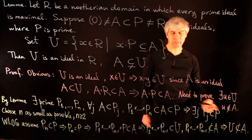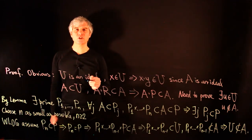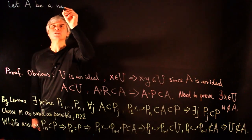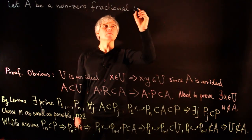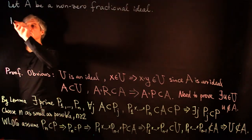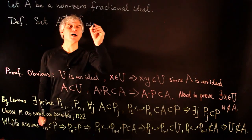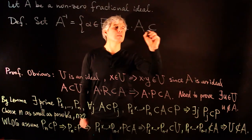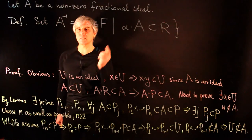One of our goals is to prove that in a Dedekind domain any nonzero fractional ideal has a multiplicative inverse. So let A be a nonzero fractional ideal. A reasonable guess for the inverse is: set A⁻¹ to be the set of all α in F such that α·A ⊆ R. We are going to prove that for Dedekind domains, A⁻¹ is precisely the inverse of A.